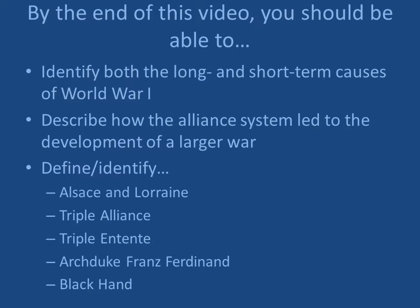You should be able to describe how the alliance system, which we'll go over in pretty good detail, led to the development of a much larger war than it initially looked like it was going to be. You should also be able to identify or define the terms Alsace and Lorraine — which should be reviewed from when we went over the Franco-Prussian War — as well as the Triple Alliance and Triple Entente, the two main alliances we're going to discuss.